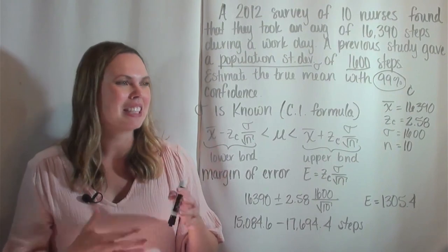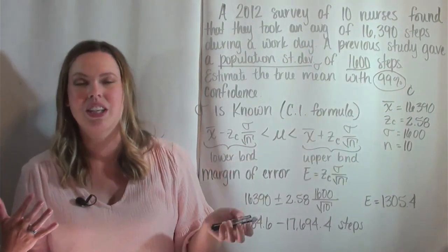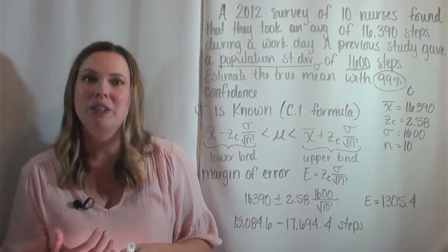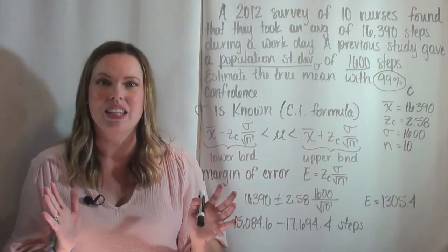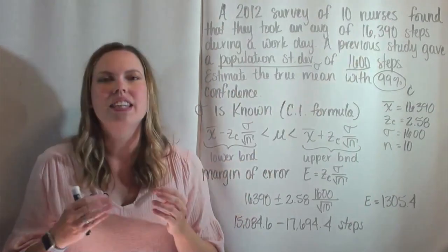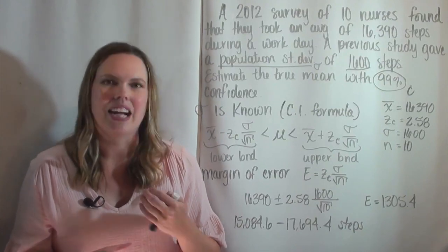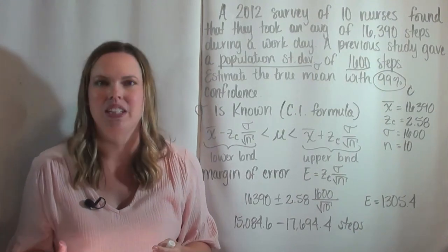Now, the only thing that's going to change if that confidence level changes would be this z_c. So if I wanted to go ahead and construct like a 95%, this would just change the z_c, but nothing else. And it's all again based on that sample data. And I think this is so cool. This is one of my favorite parts of statistics that I teach because I think it's practical.